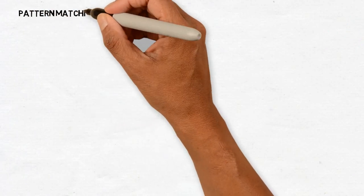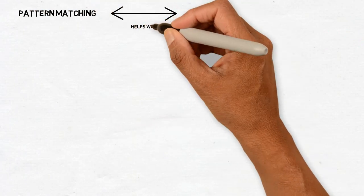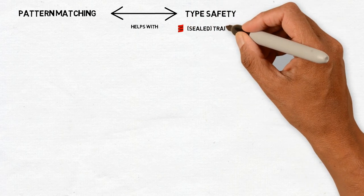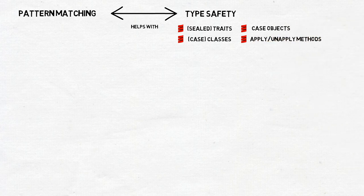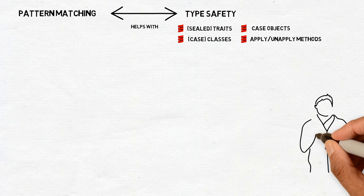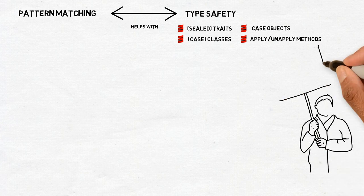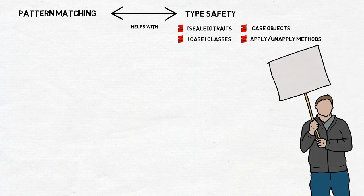So you can see now how pattern matching and type safety work hand in hand by carefully designing a hierarchy of traits, sealed traits, and classes, or case classes and case objects, as well as apply and unapply methods. You can make your code more readable and let the compiler tell you about bugs which you would otherwise only find by running the application. Debugging and refactoring become easier as well.